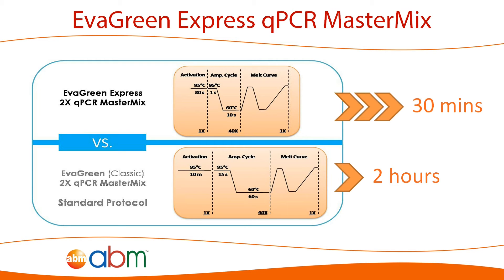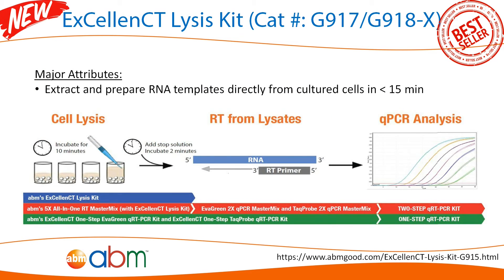Another efficient research approach developed by ABM is to shorten the required time in target screening and gene expression by introducing the XLNCT lysis kit. If the starting materials are mammalian cells, XLNCT can complete the RNA extraction and preparation in less than 15 minutes, eliminating the need for a typical chemically hazardous and lengthy labor-intensive RNA extraction.